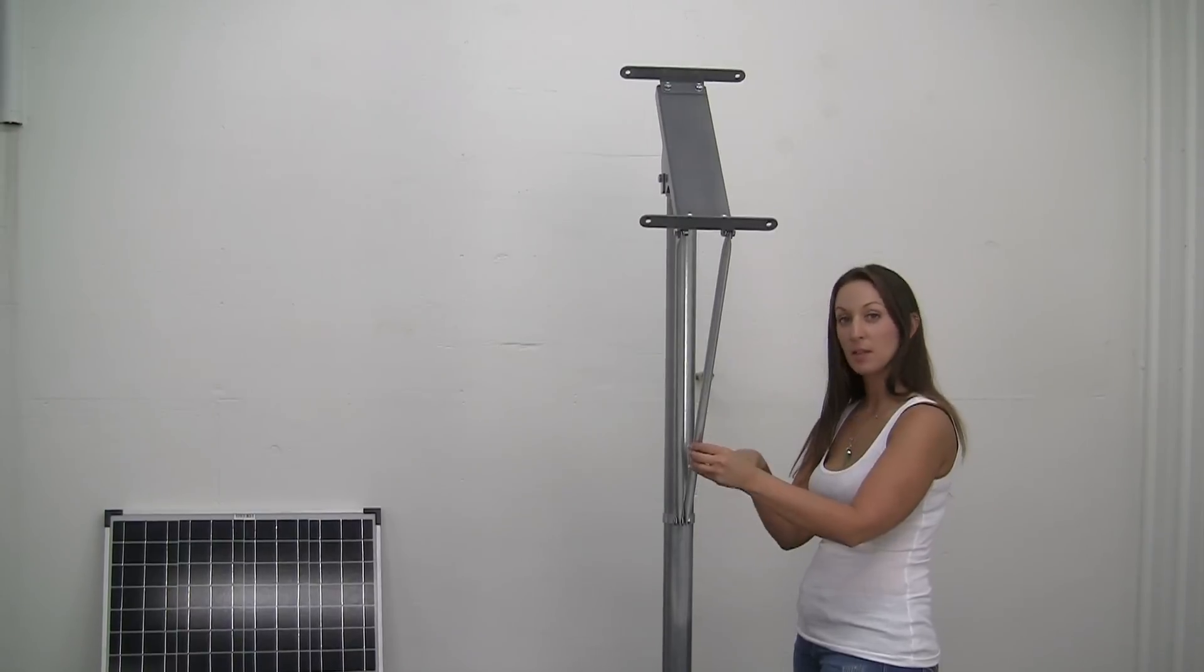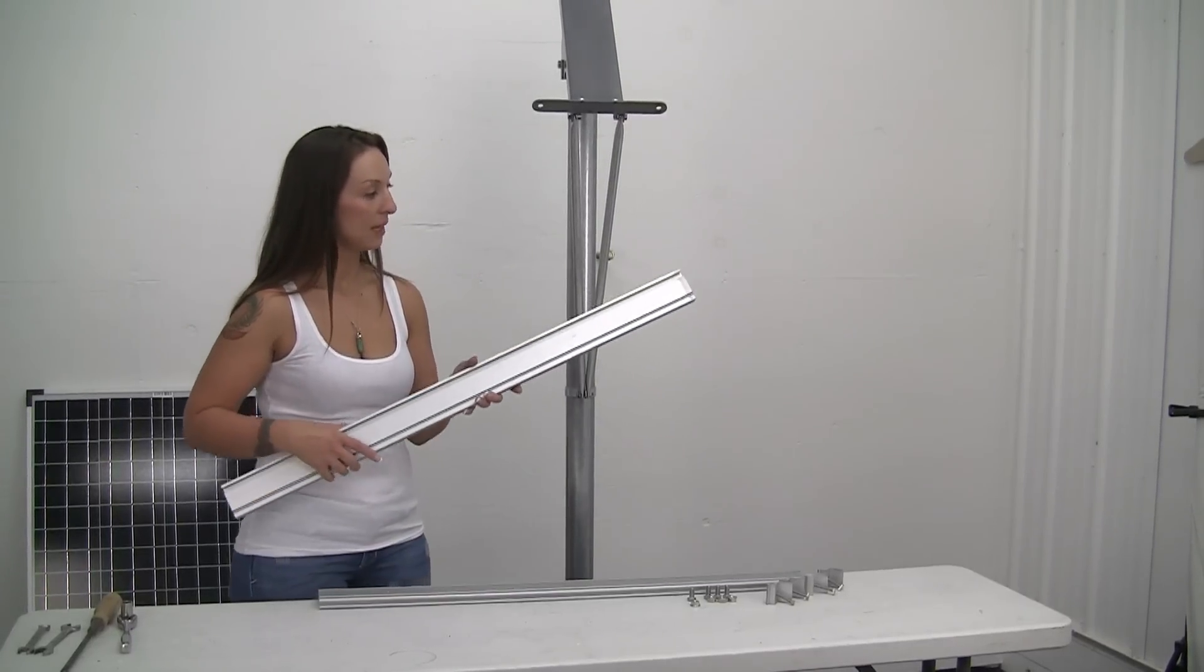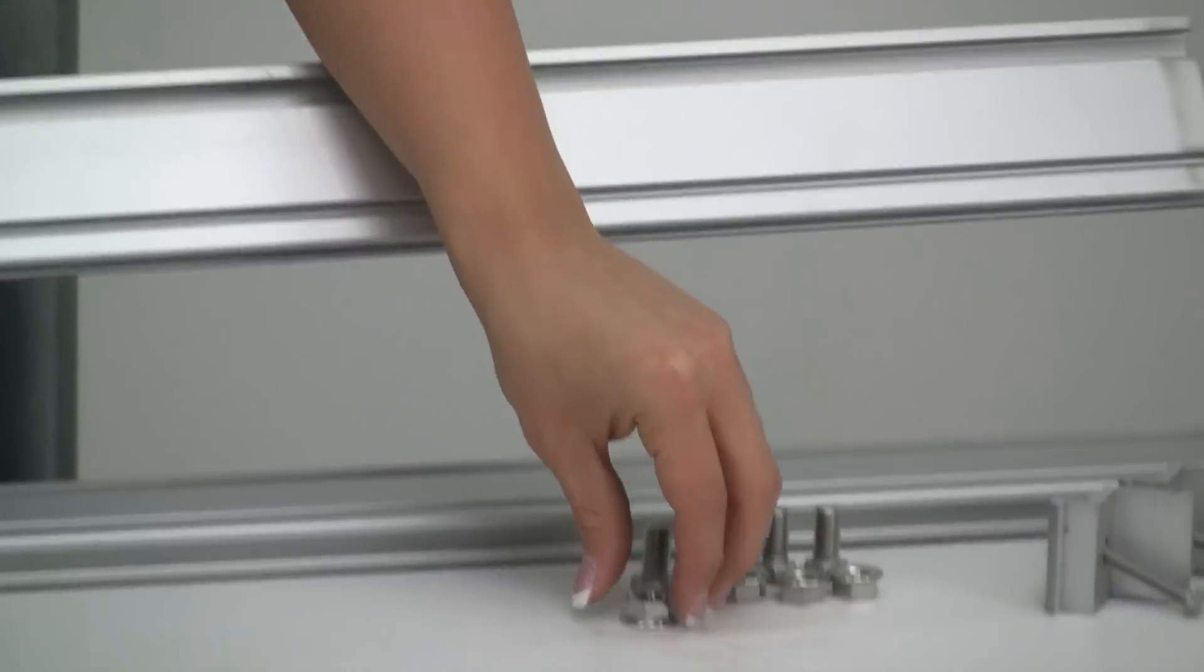And now we're going to tighten up the bottom. Now I'm going to install the rails. These come with stainless steel bolts with serrated nuts.